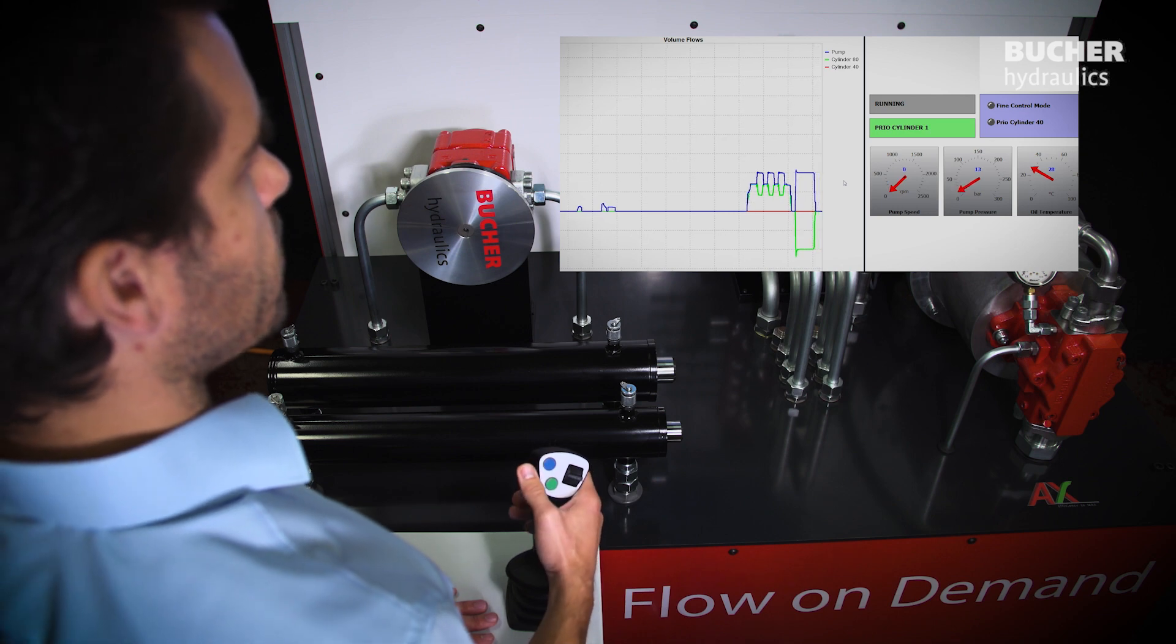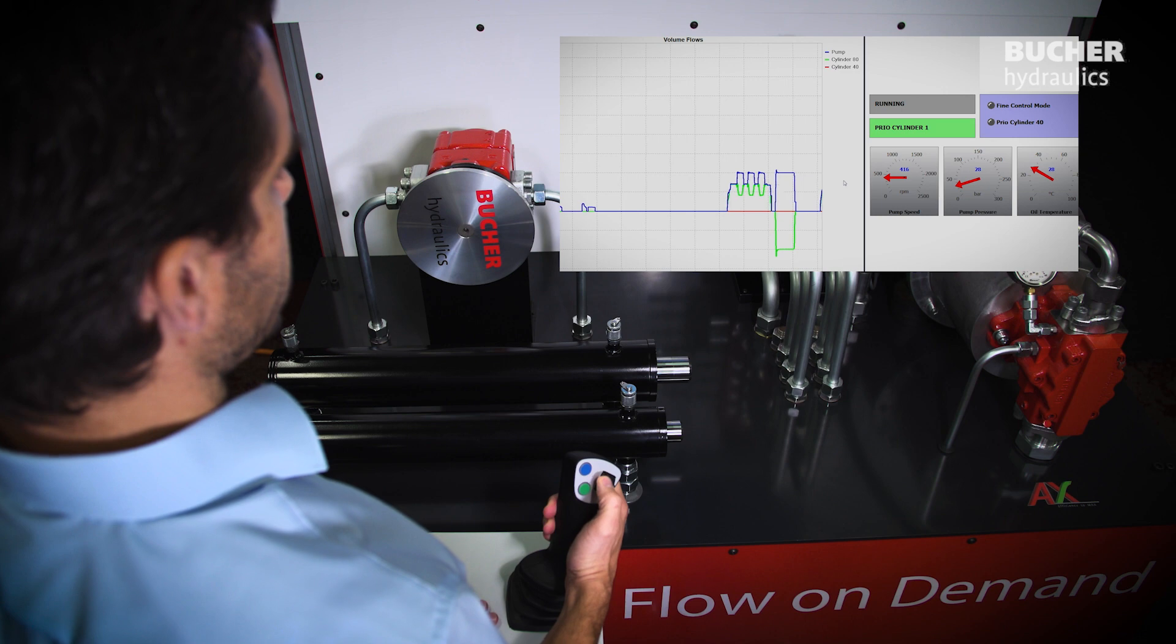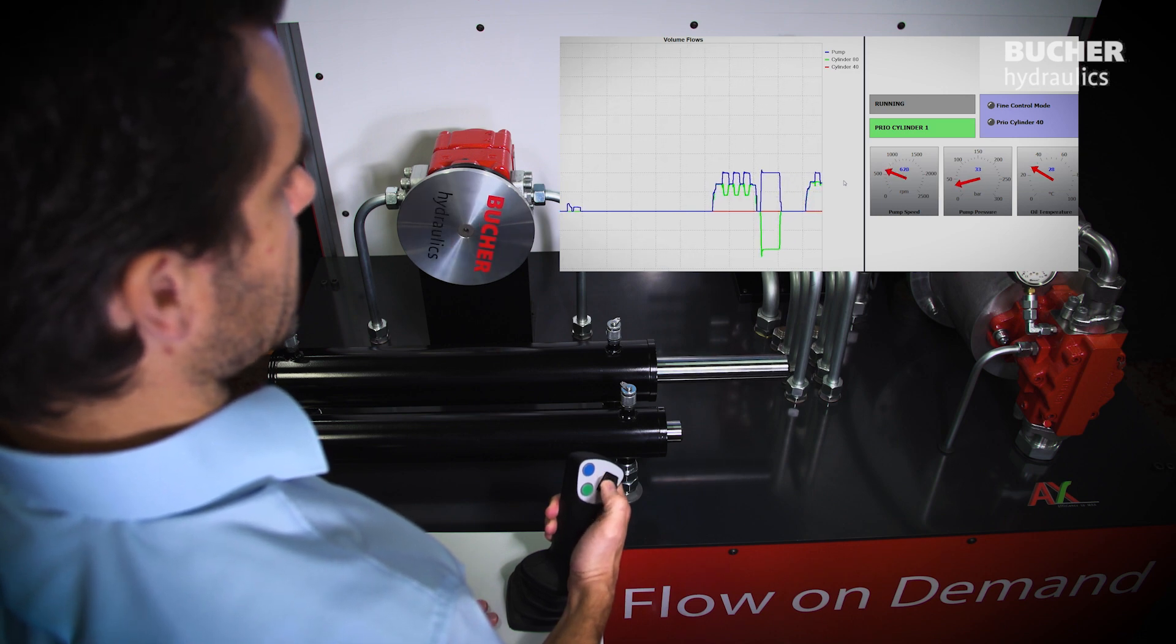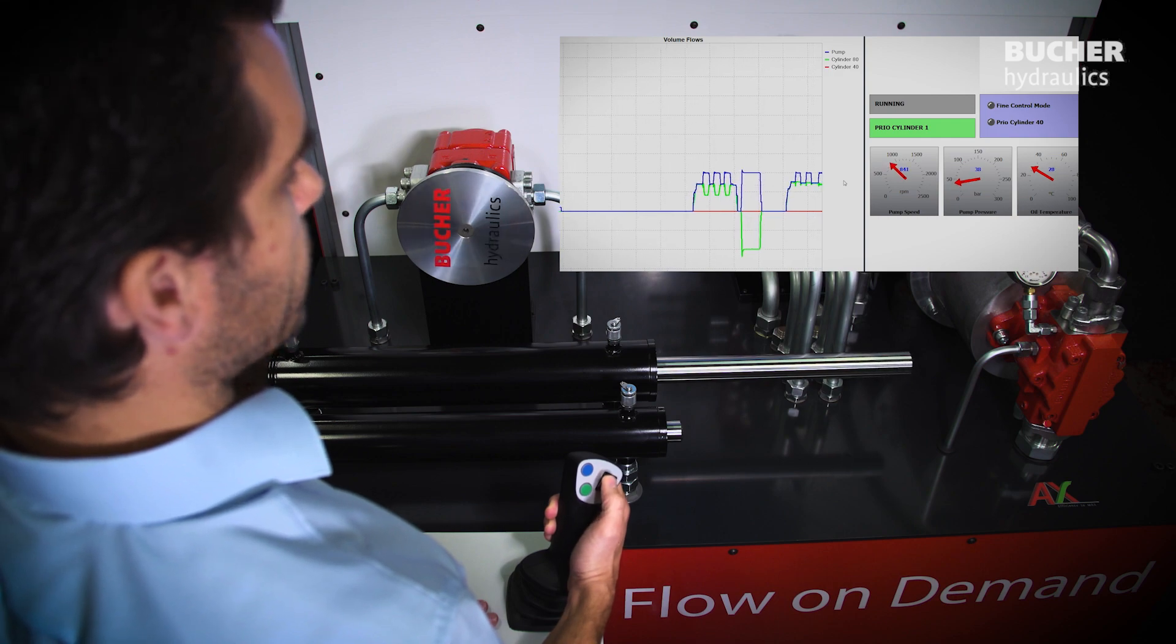But it's also possible to electronically change this behavior and prioritize the speed of cylinder one, such that we have no effect on the speed by the turning of the motor.